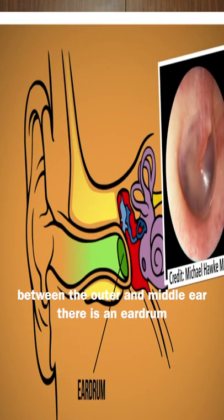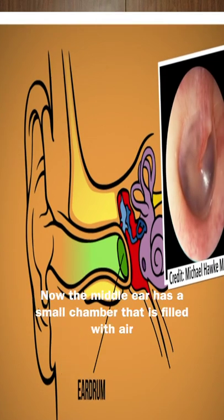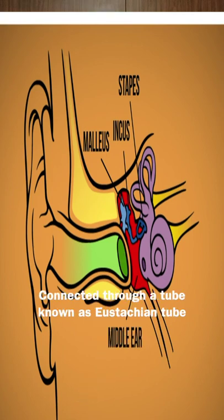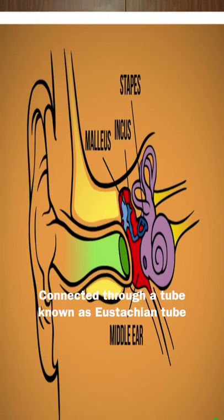Between the outer ear and middle ear, there is an ear drum. The middle ear is a small chamber that is filled with air, connected through a tube known as the eustachian tube.